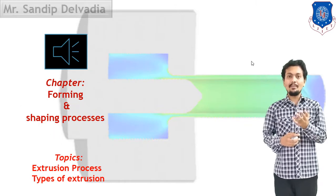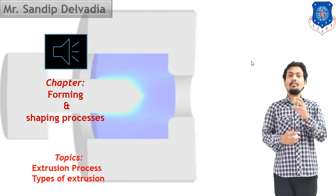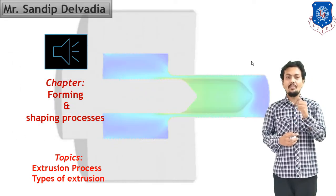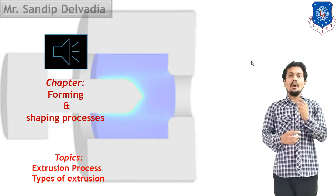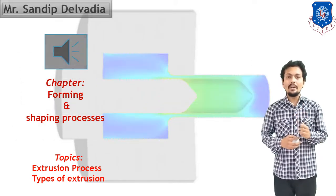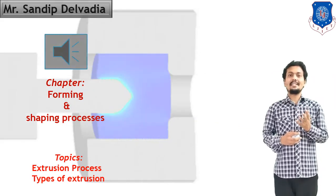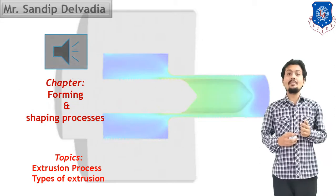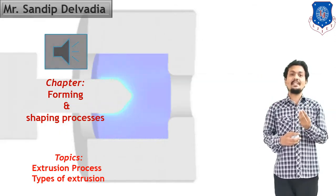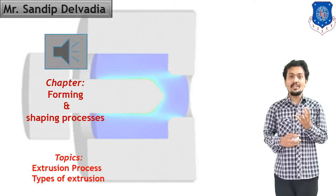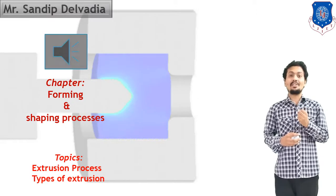We have discussed the rolling process as well as the forging process. In both these processes, shape will change with the help of application of pressure. In today's session, we are going to start our discussion on another process — that is the extrusion process. Extrusion process comes under the category of forming and shaping process.